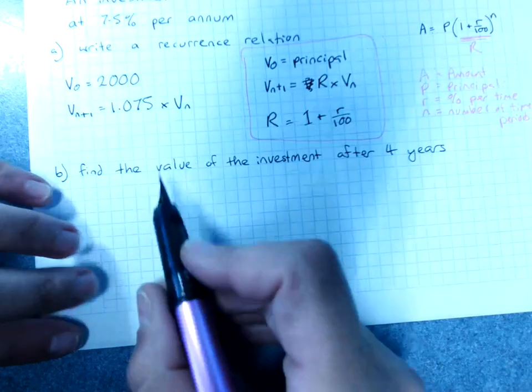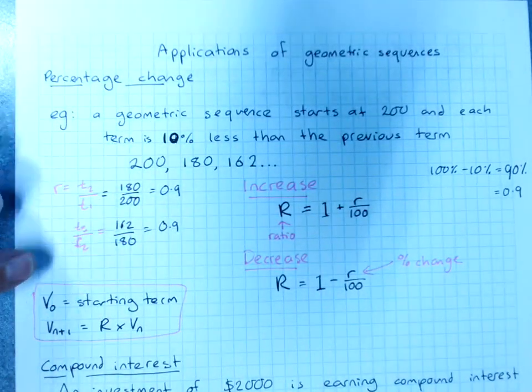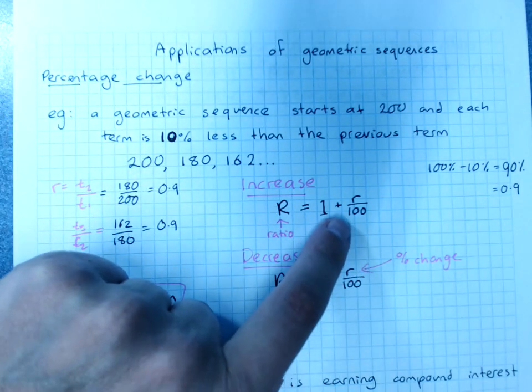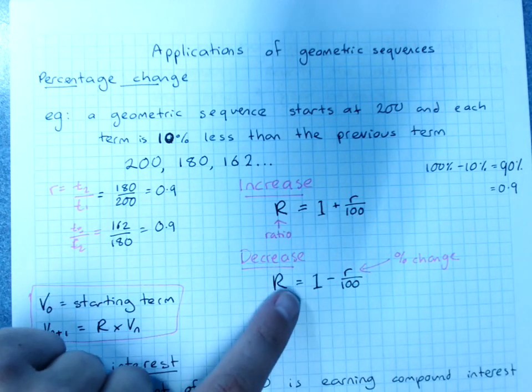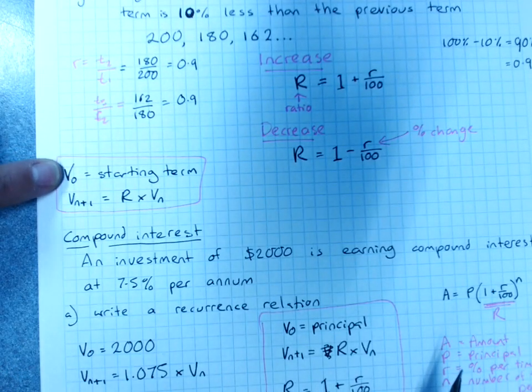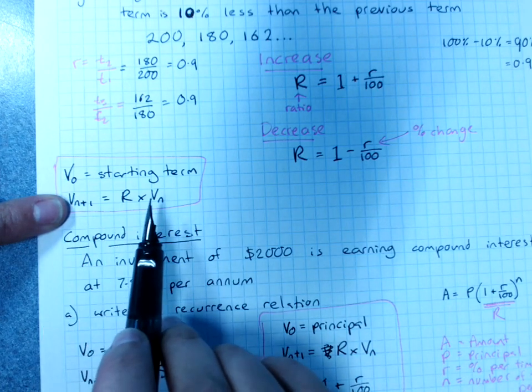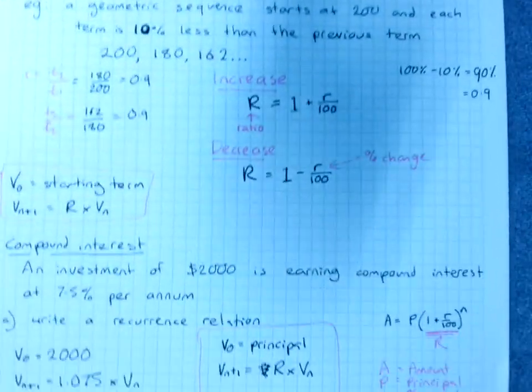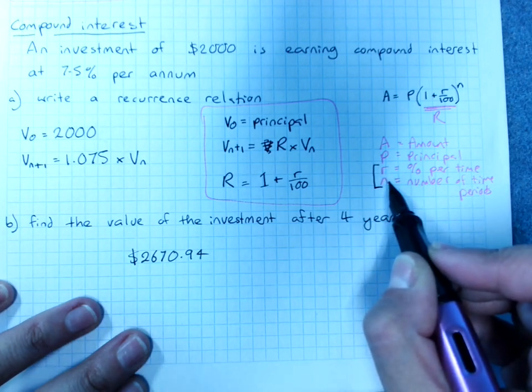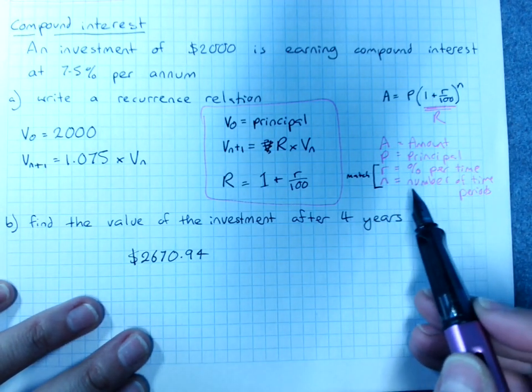Or of course you could have used a power. So, percentage change using a common ratio, we'll use capital R for that. Percentage increase is 1 plus the interest rate over 100. Percentage decrease is 1 minus the interest rate over 100. Our starting term is V0, value before the first year or before the first time period. Recurrence relationship is the common ratio times the term before it. The only thing we really need to remember apart from that with compound interest is that the interest rate and the time periods have to match.